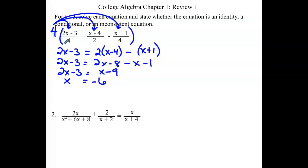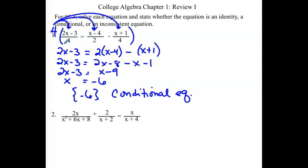It's always a good idea to check that. We don't have any excluded values in this one because there's no variables in our denominator, so it should work. Our solution is negative 6, and we call this a conditional equation — it works under the condition that x has to be negative 6.